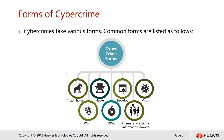Let's look at the forms of cyber crimes. Cyber crimes take various forms. Common forms include the Trojan horse, backdoor software, viruses, worms, and DDoS attacks — all of which were mentioned in previous slides. These are hacker techniques. There is also internal and external information leakage, which can be carried out by internal staff.